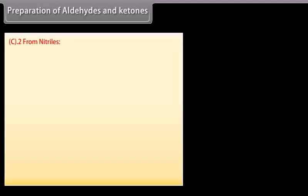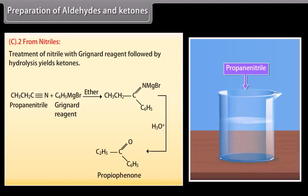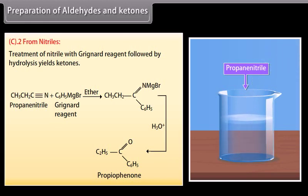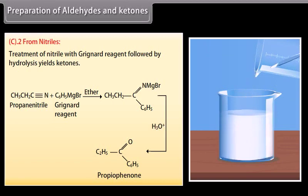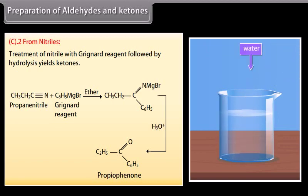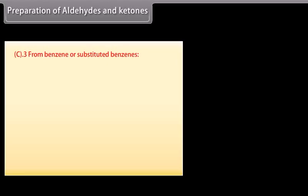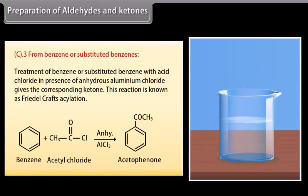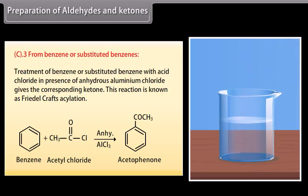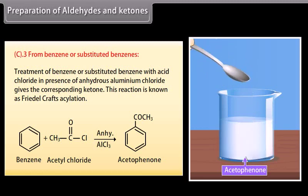From nitriles: treatment of a nitrile with a Grignard reagent followed by hydrolysis yields ketones. The Grignard reagent in ether reacts with propanenitrile to form an intermediate, which upon hydrolysis gives propiophenone. From benzene or substituted benzenes: treatment of benzene or a substituted benzene with an acid chloride in the presence of anhydrous aluminium chloride gives the corresponding ketone. This reaction is known as Friedel-Crafts acylation.